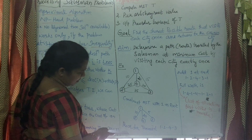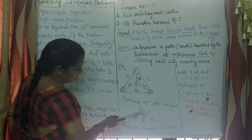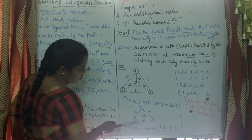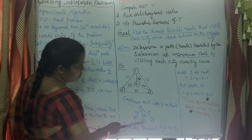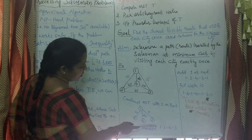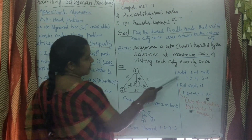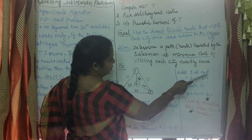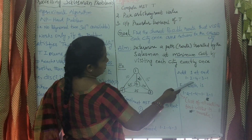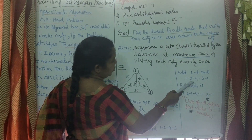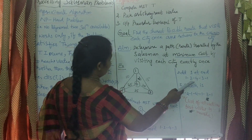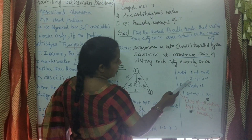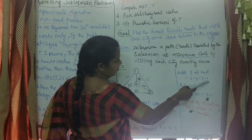Next, the pre-order traversal for this tree gives us: 1, 2, 4, 3. Then we add 1 at the end to complete the tour of the travelling salesman. The optimal tour is therefore: 1, 2, 4, 3, 1 — always returning to the origin city.